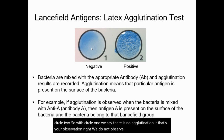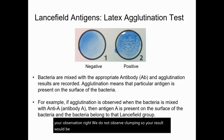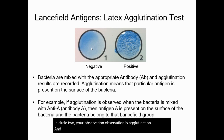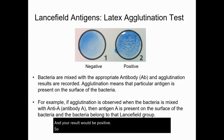So your result would be negative. In circle two, your observation is agglutination, and your result would be positive. That's one way you can use the latex agglutination test.